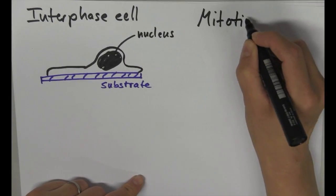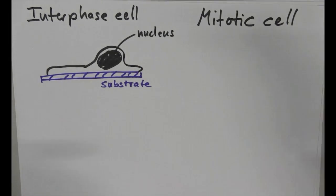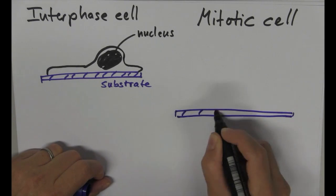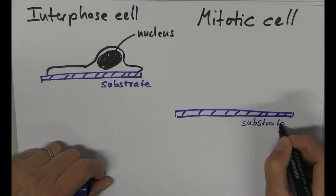Now when cells are preparing for cell division and entering mitosis, they undergo a shape change and acquire a round, almost spherical shape.